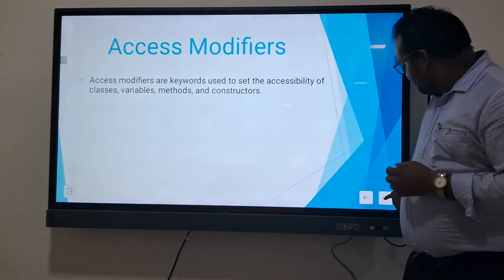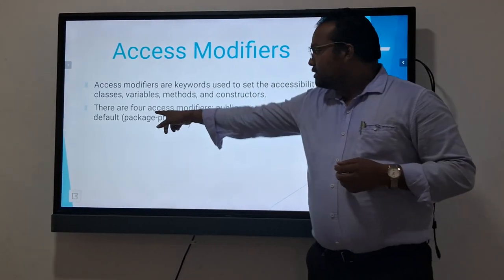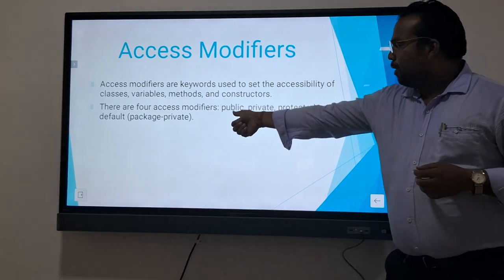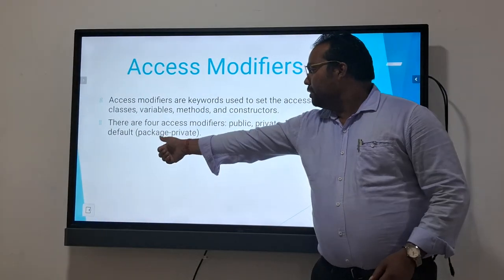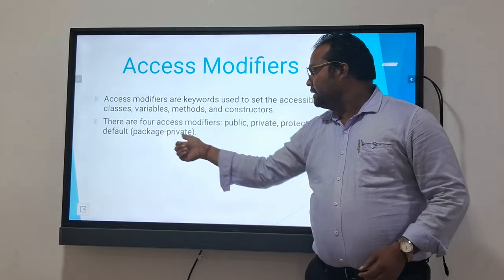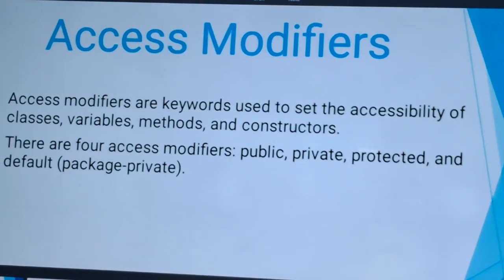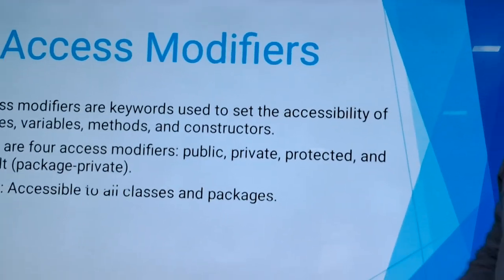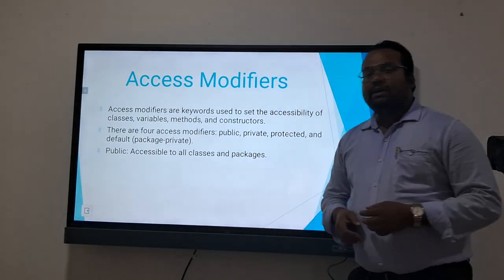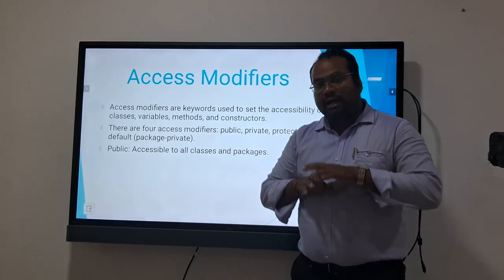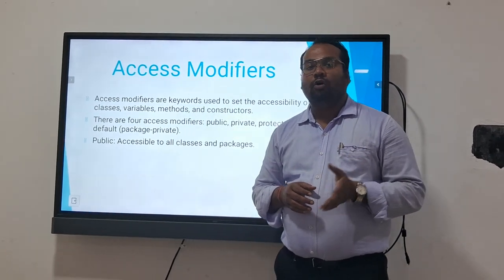There are mainly four access modifiers: public, private, protected, and default. Public access is accessible to all classes and packages. Public access modifiers are accessible by all the packages and all the methods, because it is open to all.